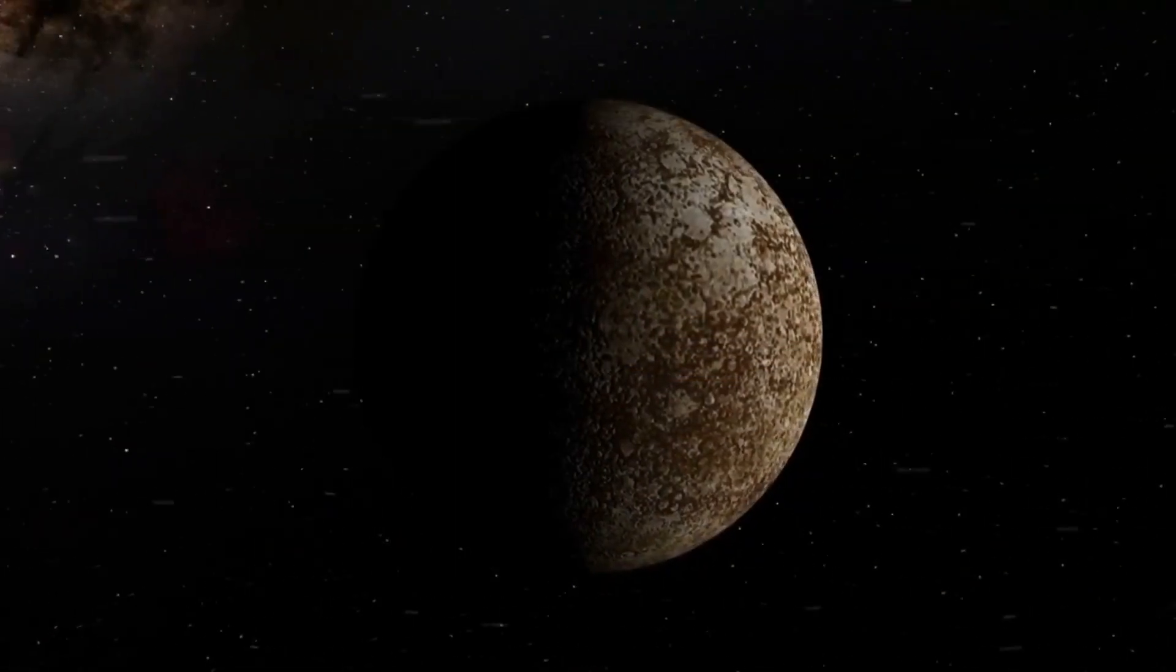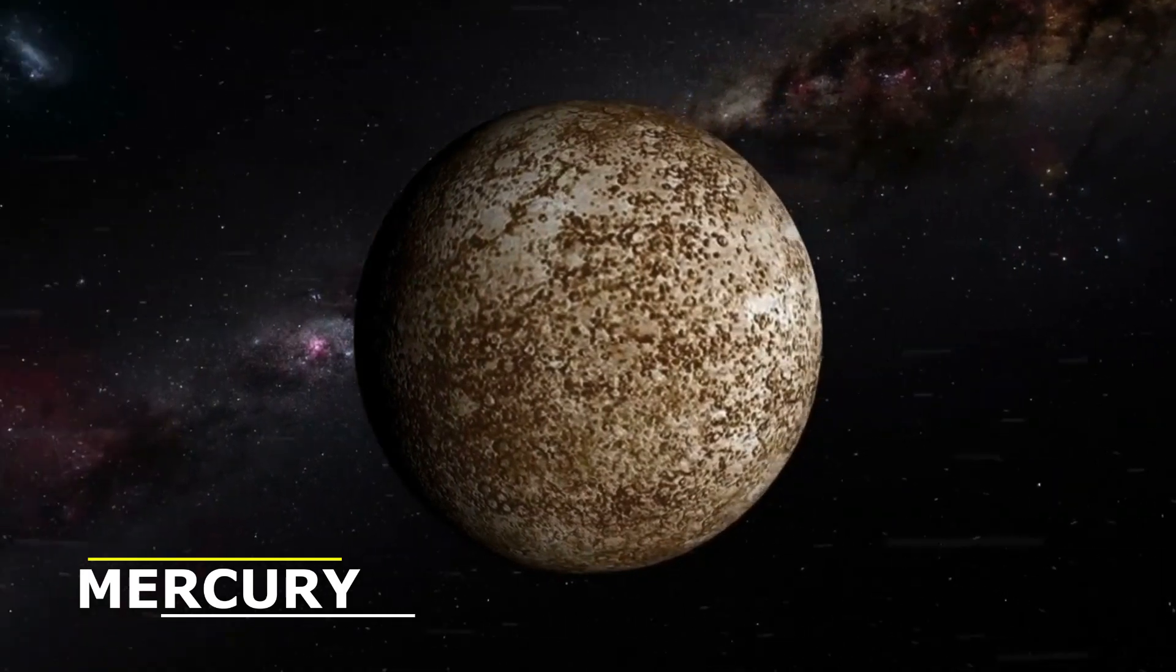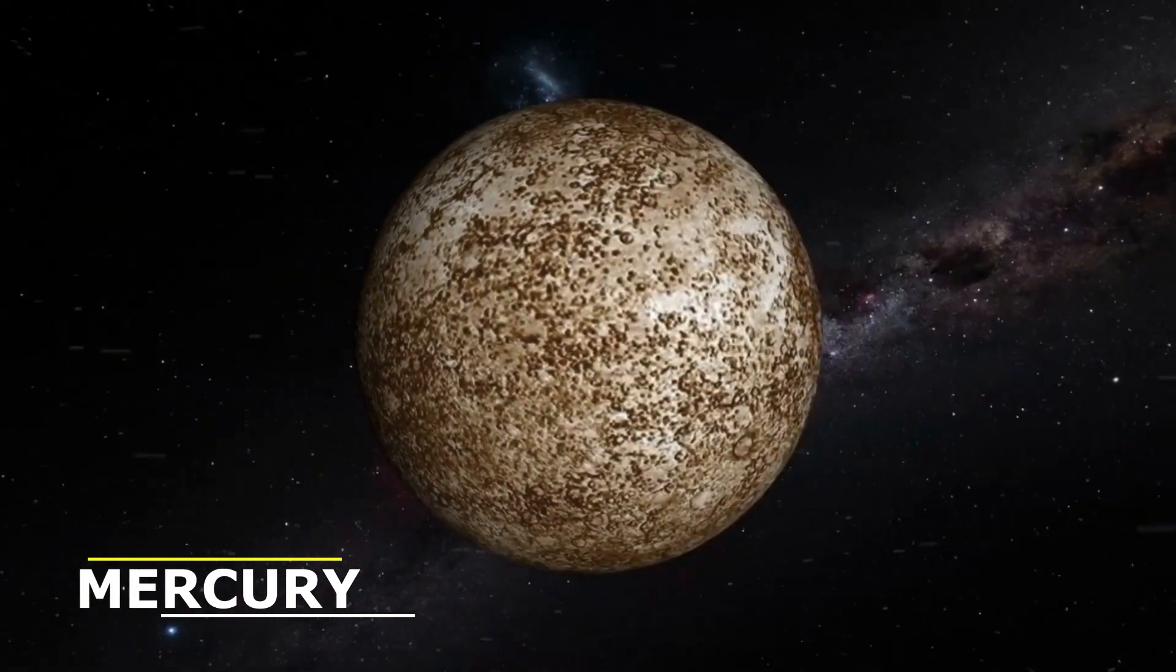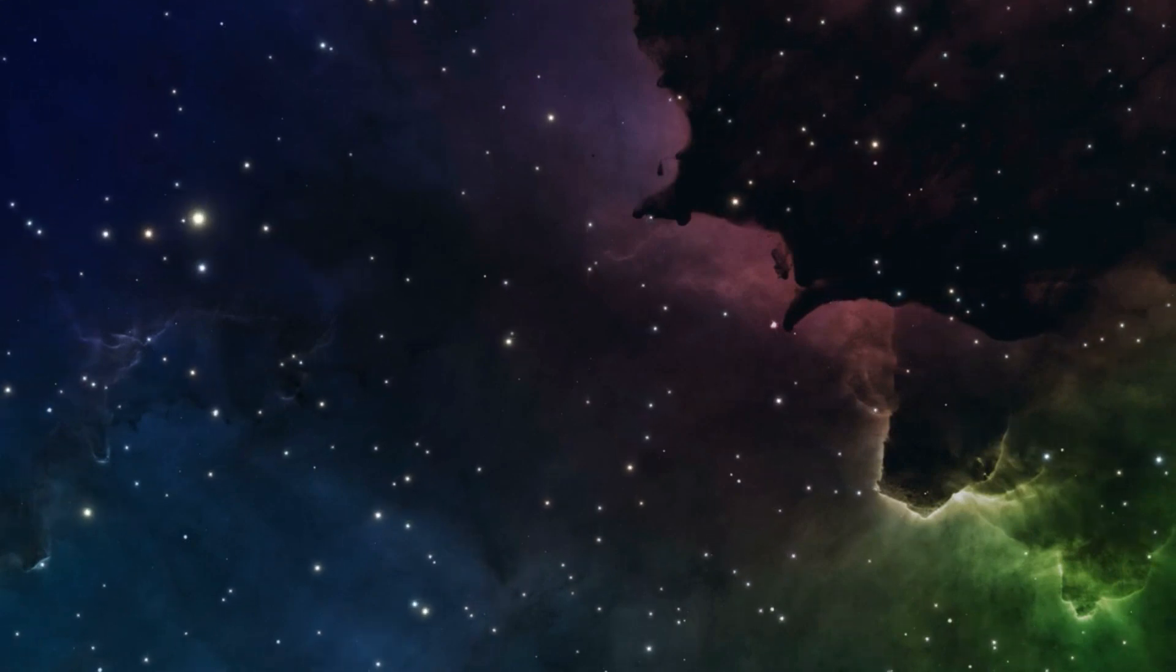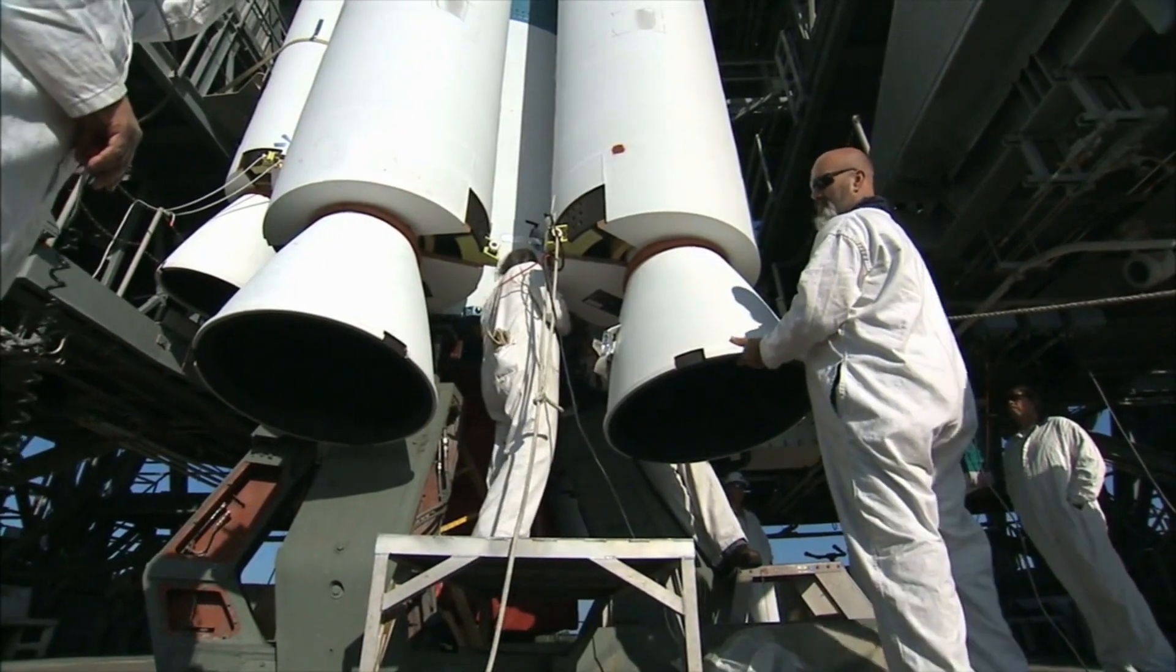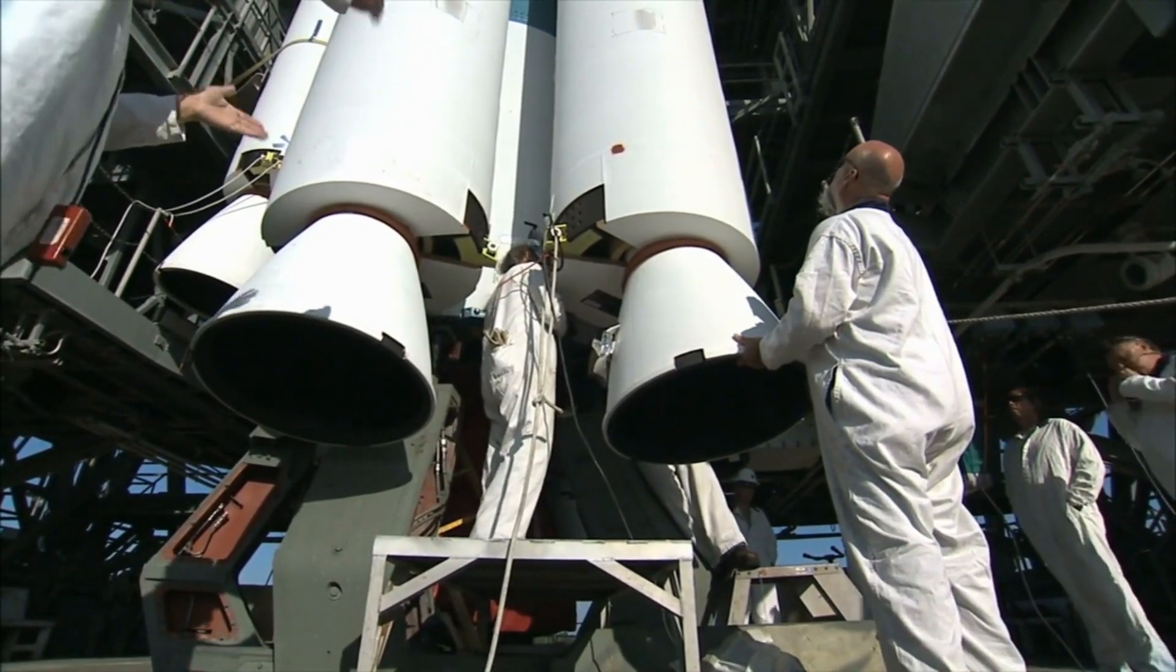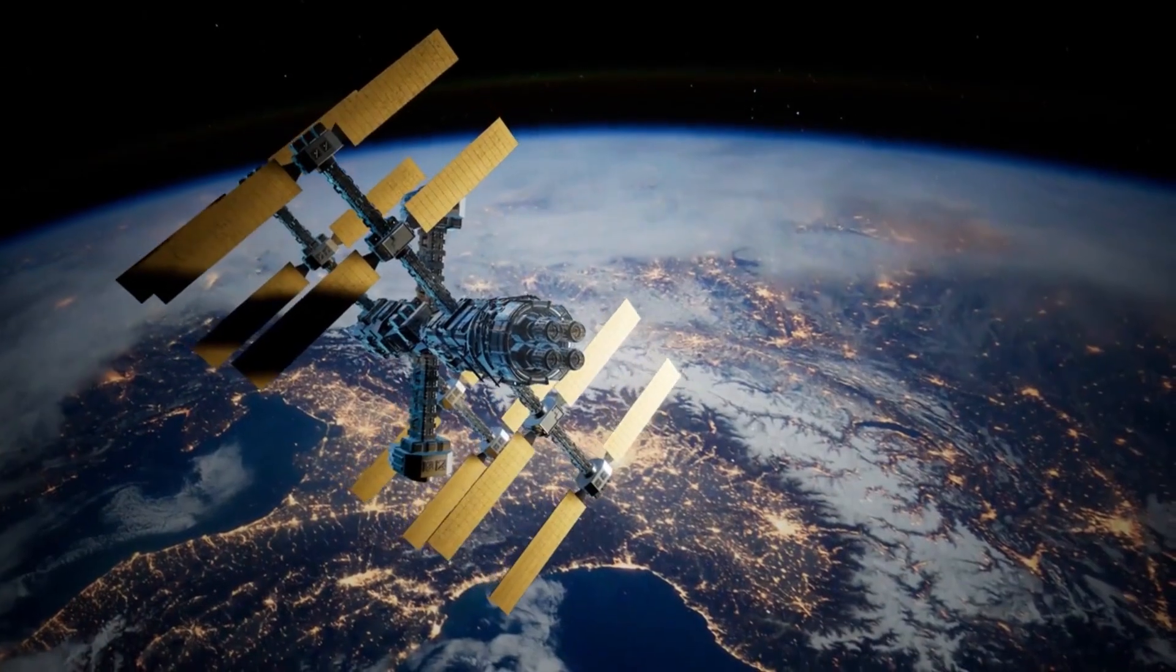On planets without an insulating atmosphere, temperatures wildly fluctuate between day and night. Mercury regularly sees days around 840 degrees Fahrenheit and frigid nights as low as minus 275 degrees Fahrenheit. And in space itself, some spacecraft experience temperature differences of 60 degrees Fahrenheit just between their sunlight and shady sides.